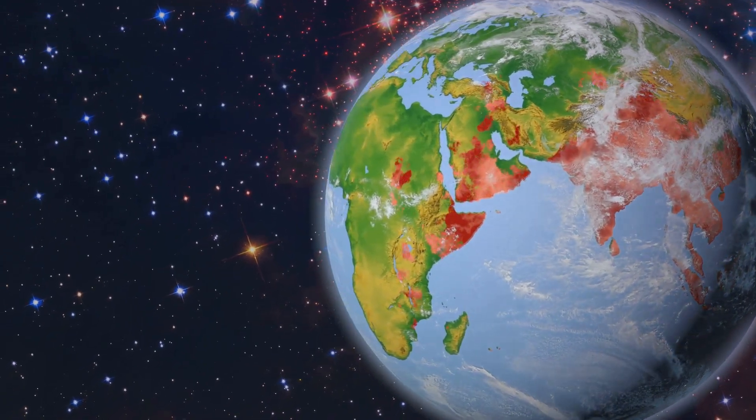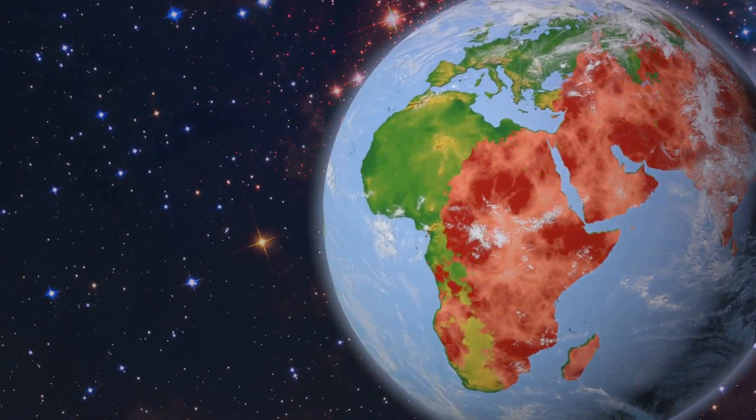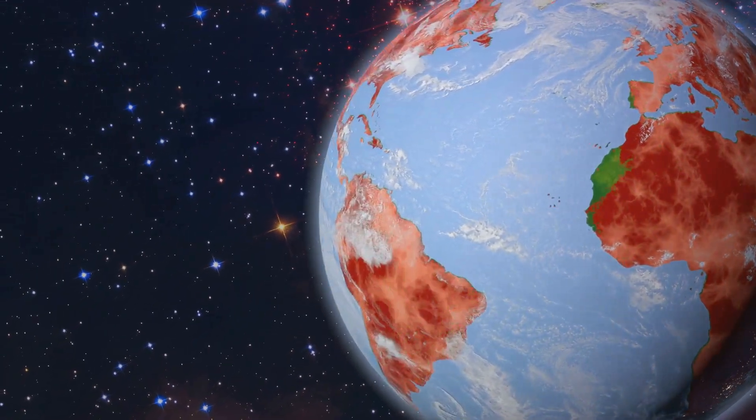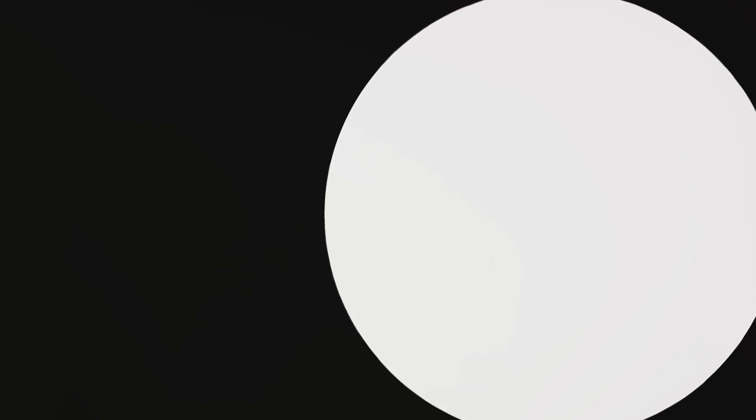Wegener's theory, although initially met with skepticism, laid the groundwork for our understanding of the Earth's surface. However, it wasn't until the mid-20th century that compelling evidence for continental drift emerged.